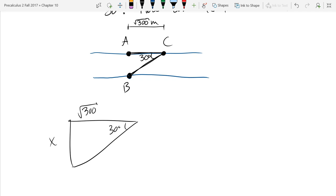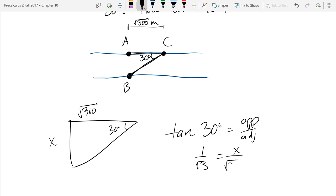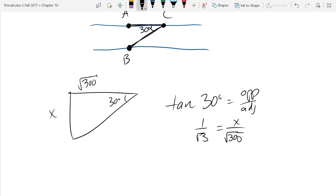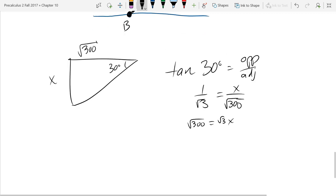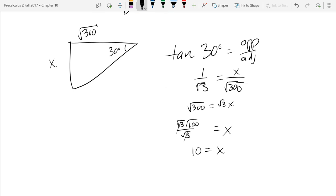We got our hypotenuse missing, so that narrows it down to tangent or cotangent. Tangent of 30 equals opposite over adjacent, and tangent of 30 degrees is 1 over square root 3. Our opposite is x and our adjacent is square root 300. Cross multiply and divide by square root 3. Square root 300 is square root 3 times square root 100, so we can factor that out, cancel, and get 10 meters.